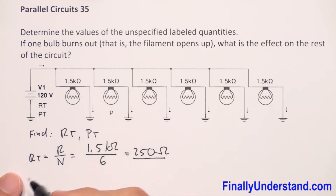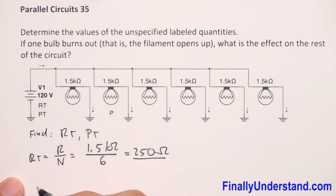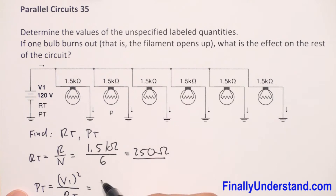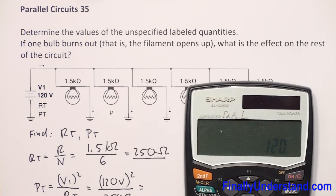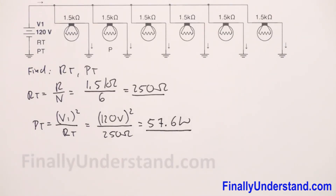For total power, I'll use the formula containing voltage and resistance, since voltage is given and we found the total resistance. P total equals V1 squared over R total, which is 120 volts squared over 250 ohms. That gives us 57.6 watts — the power drawn from the voltage source when the circuit is functioning properly.